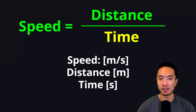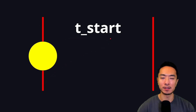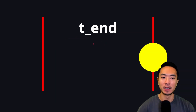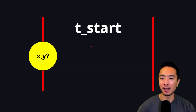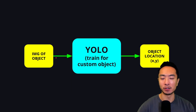Now that we've figured out distance, we focus on how to figure out time to calculate speed. When the object center passes the first red line, we mark this as T start. When the object passes the second line, this is T end. To know when the object passes the red line, we need the X and Y coordinates of the object, which means we need to run YOLO.